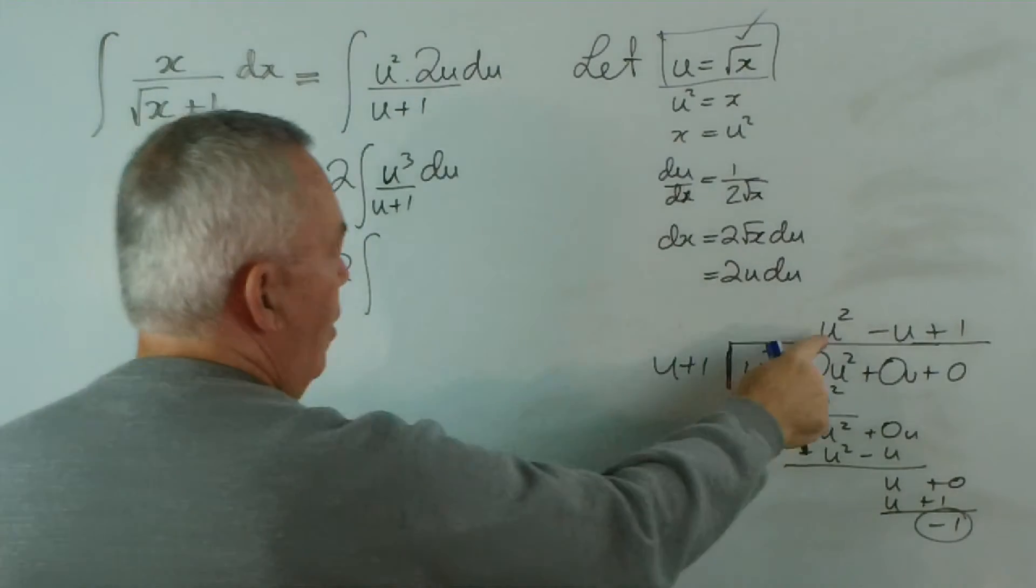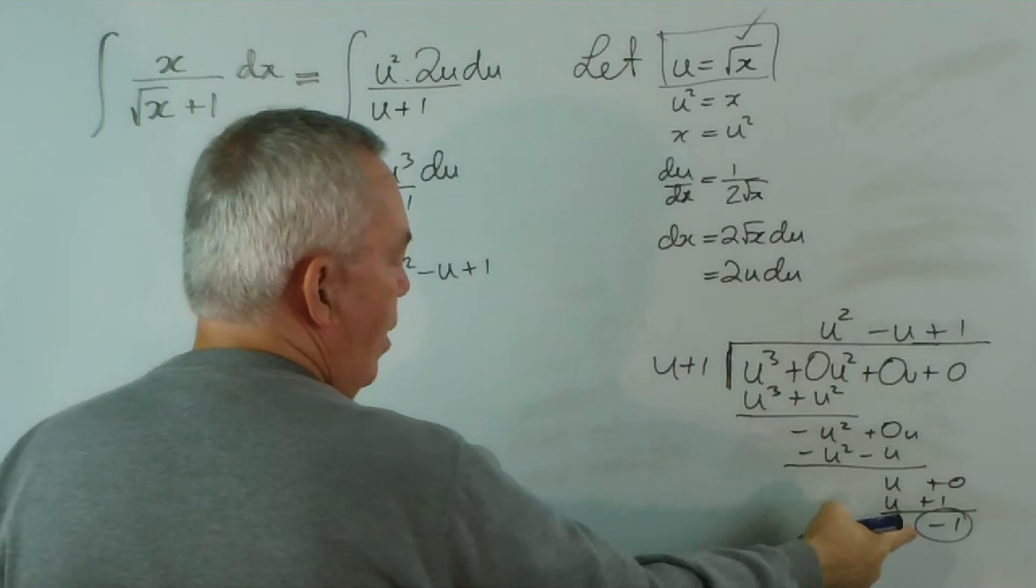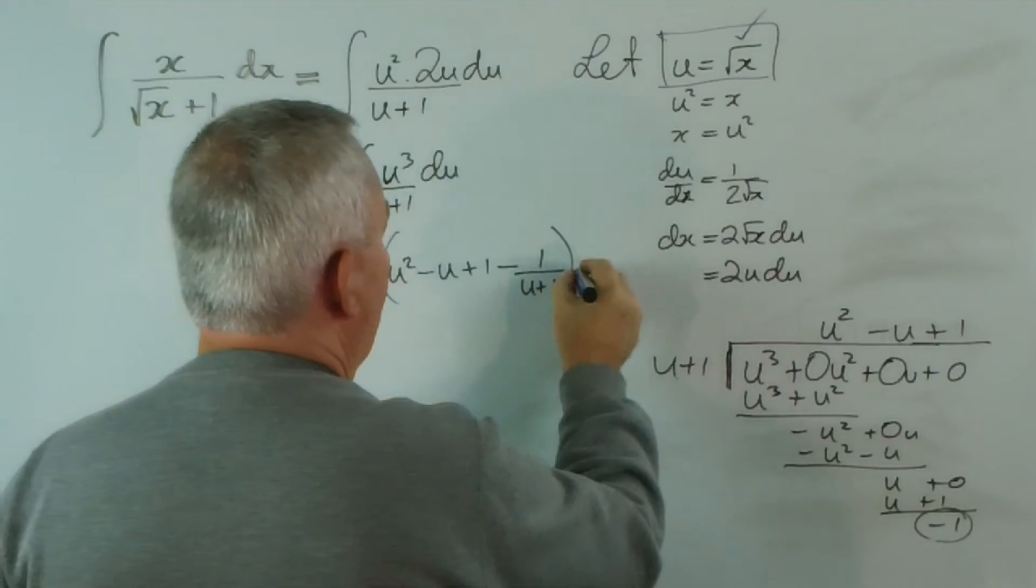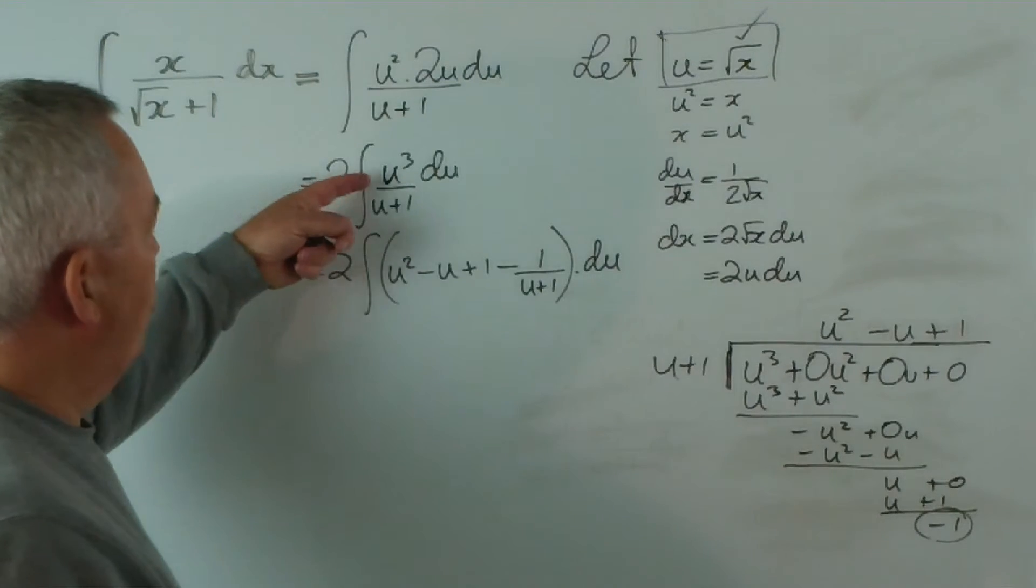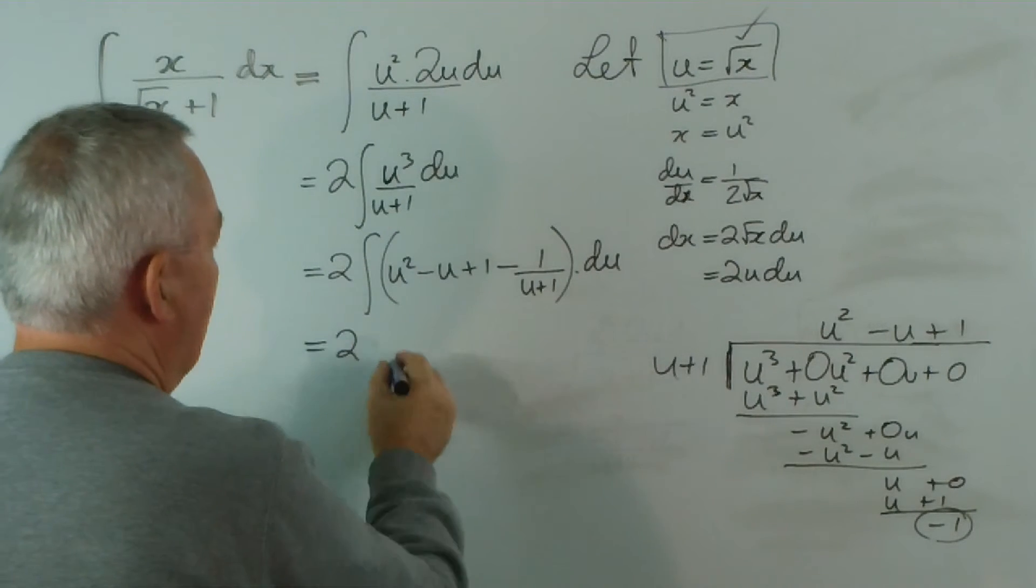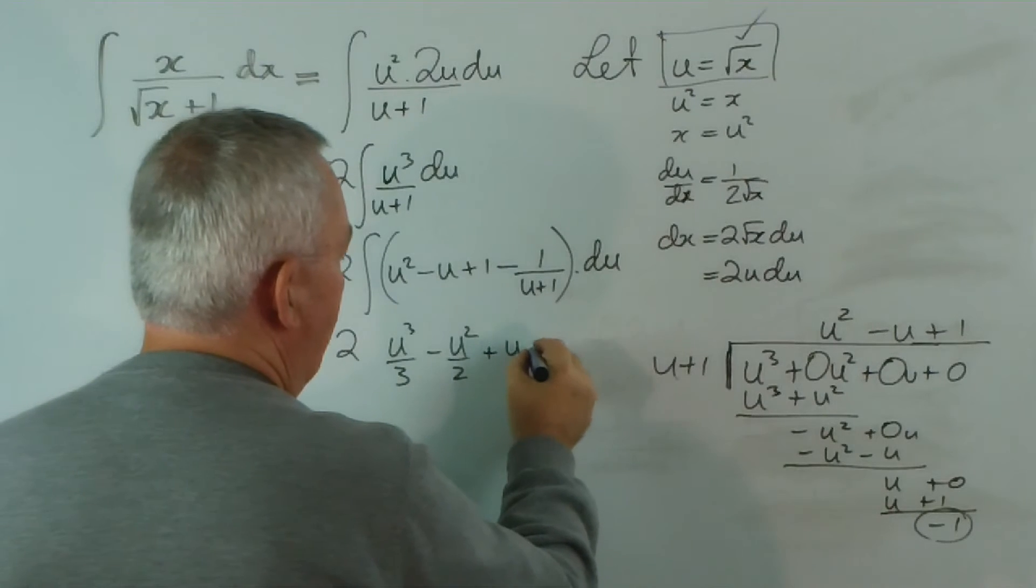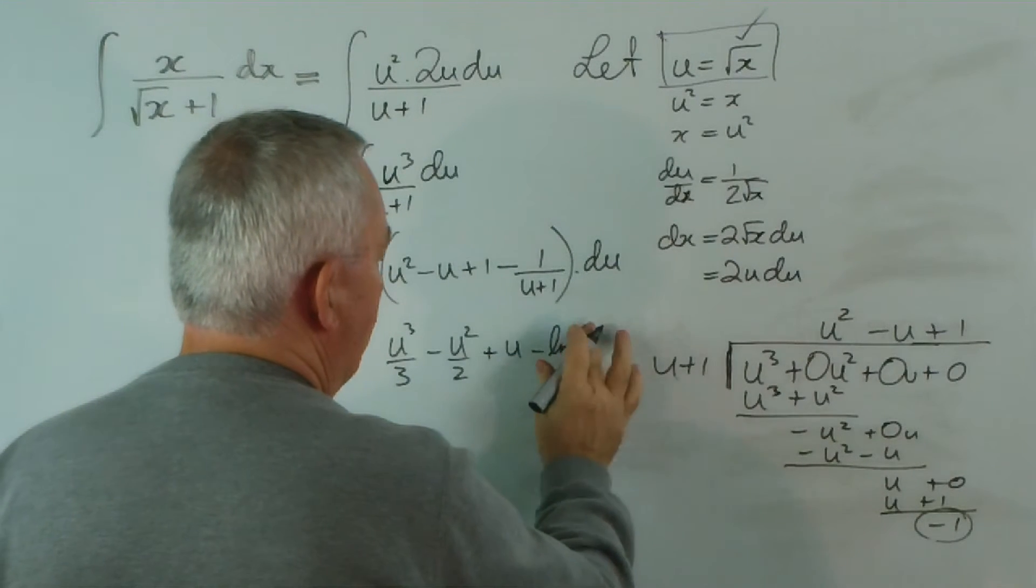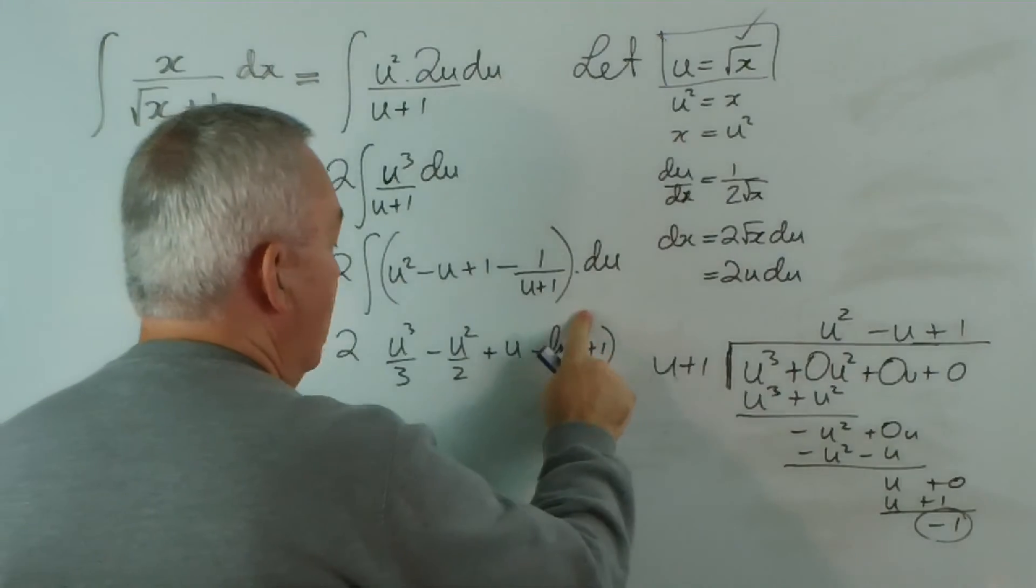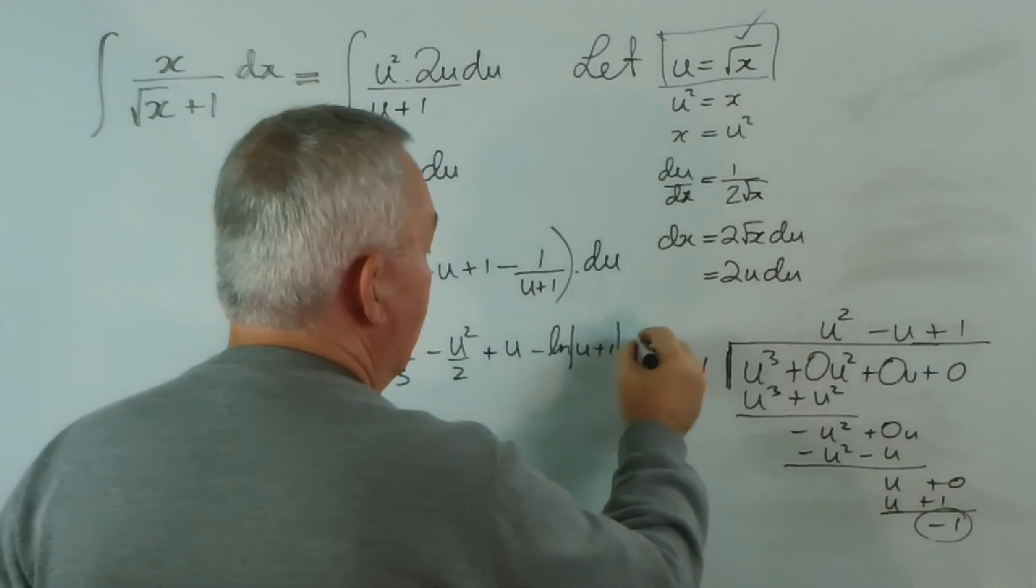This gives us the integral of u squared minus u plus 1, with minus 1 still divided, so I'll put negative 1 over u plus 1 du. So after performing our division, we get that. The integral now of each of these four terms is quite easy. I get u cubed on 3, minus u squared on 2, plus u, minus the logarithm, the natural logarithm of u plus 1. I should use the absolute value, plus a constant of course.